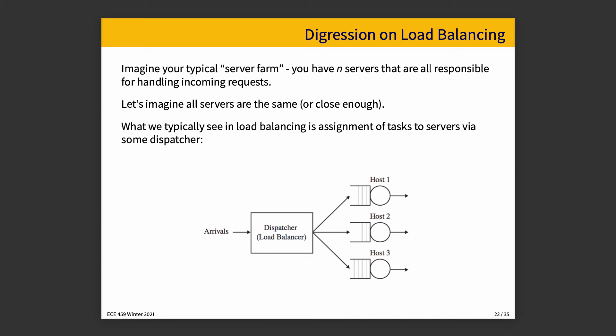We'll take a short digression into the subject of load balancing. If you picture a server farm or some distributed application, we have N servers all responsible for handling incoming requests. We can assume all servers are the same or close enough that differences don't really matter. We typically see in load balancing some assignment of tasks via a dispatcher of some sort. Cloud services providers offer tools that automatically balance requests, and without connection keep-alive the same clients get matched with the same servers in case there's some internal state. Usually an incoming request goes to a dispatcher, which then assigns it to a different host.